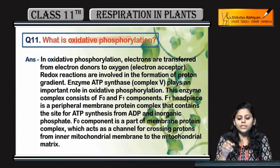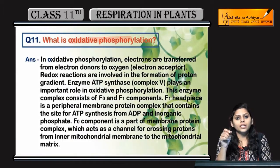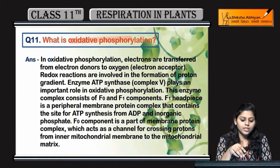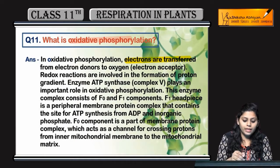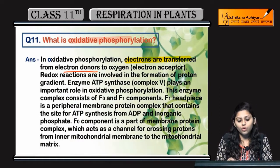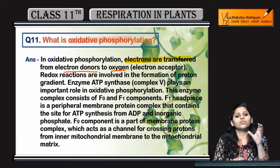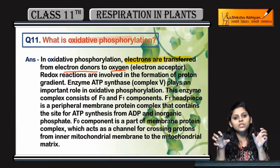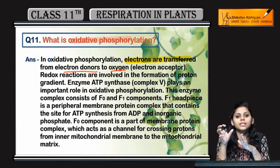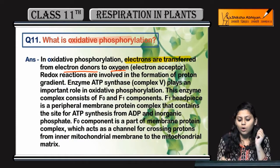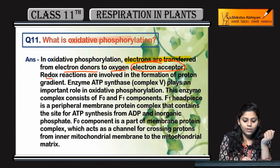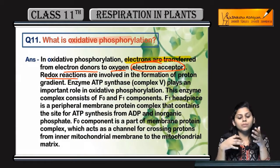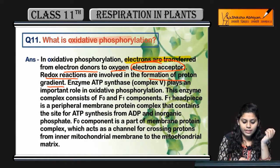What is Oxidative Phosphorylation? Oxidative Phosphorylation involves the transfer of electrons from an electron donor to oxygen. This means oxygen acts as the electron acceptor in redox reactions, which results in the formation of a proton gradient.